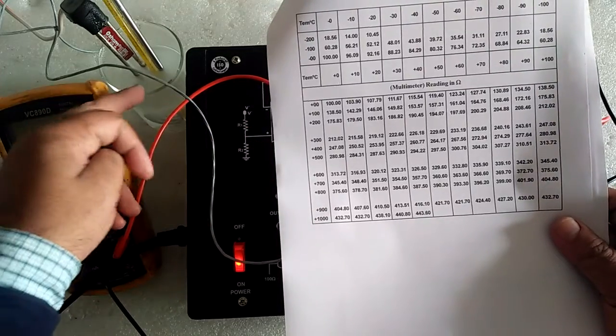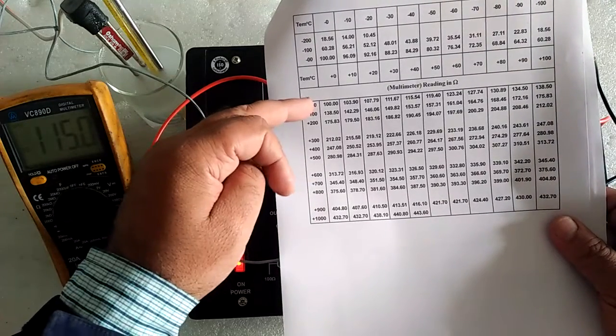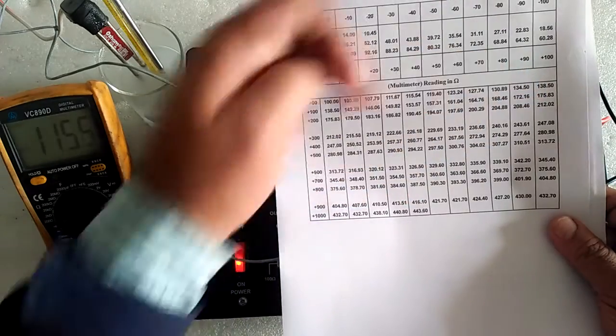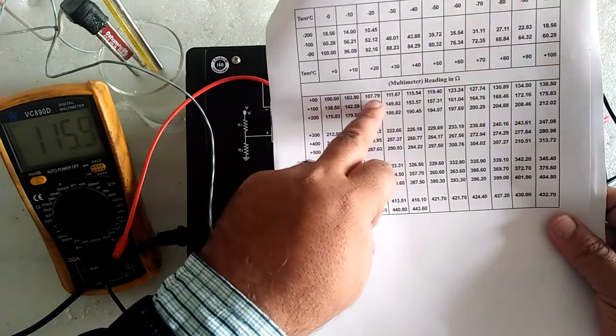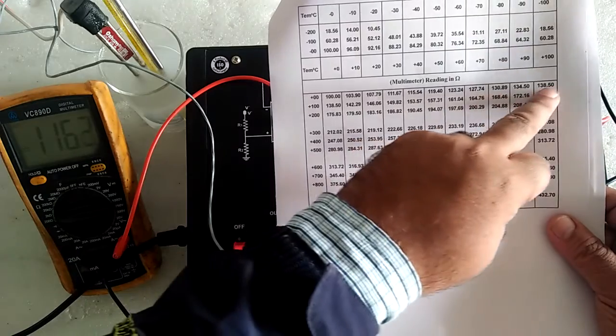Because we have the boiling range of water from 20 to maximum 100, so we will get the result from here to here.